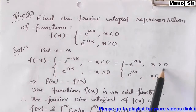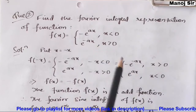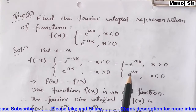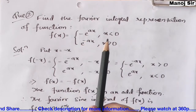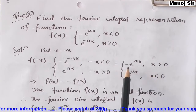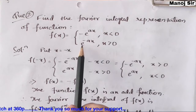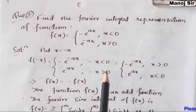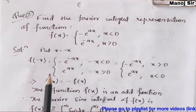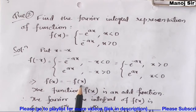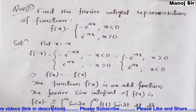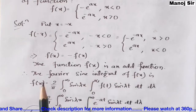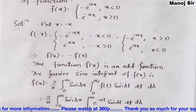Comparing f(-x) with f(x): when x < 0, f(x) has -e^(ax) and f(-x) has e^(ax); when x > 0, f(x) has e^(-ax) and f(-x) has -e^(-ax). It is clearly visible that f(-x) = -f(x), so the given function f(x) is an odd function.